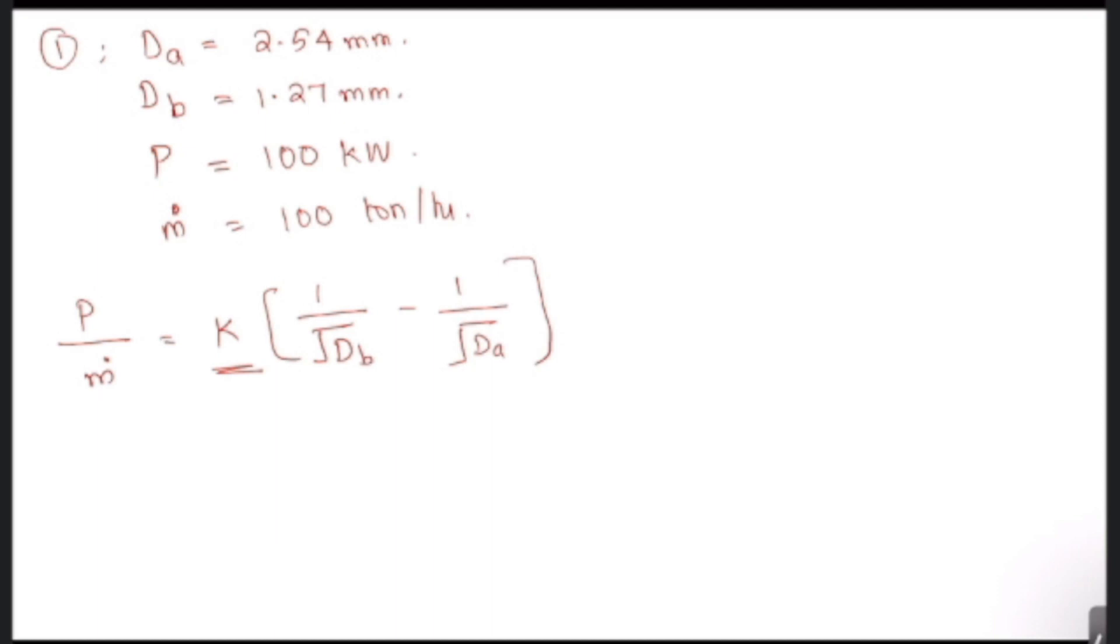So what we need to do here is substitute all these values and find the constant K. So substituting, we can write 100 by 100 is equal to K into 1 by root of 1.27 minus 1 by root of 2.54. And solving this equation, we can get the constant K is equal to 3.8476.